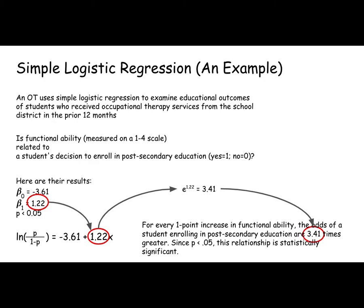So here's an example. Let's say an OT uses simple logistic regression to look at educational outcomes. They look at the predictor variable as functional ability measured on a one to four scale, and the outcome is whether a student decides to enroll in college. So that's a yes or no.